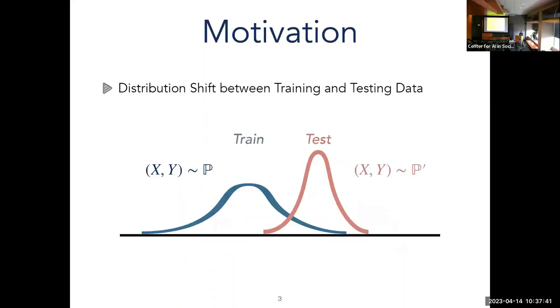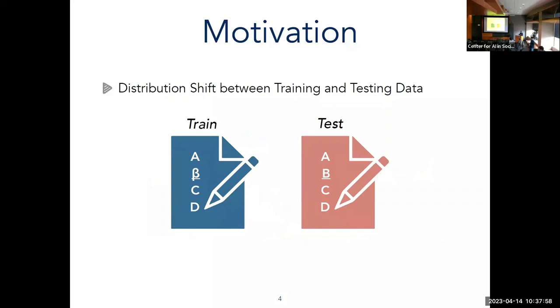However, within these domains, machine learning models are susceptible to distribution shifts, which is when the training data and the testing data or deployment data are different. And so this can occur for many reasons. Sina in his last presentation gave one reason for it, and I'll give you perhaps another motivation as to why distribution shifts may occur.